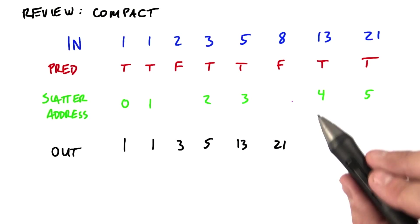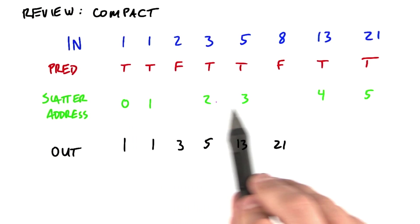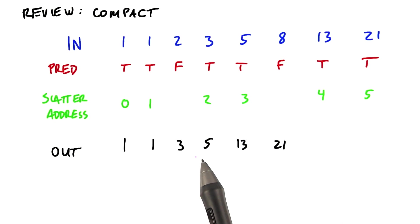If you recall from earlier in this unit, the way that we compacted an array of input elements was to compute the address for each of the input elements to be written into the output array.